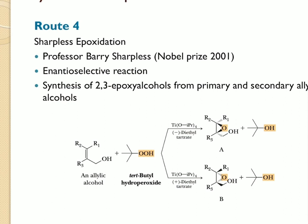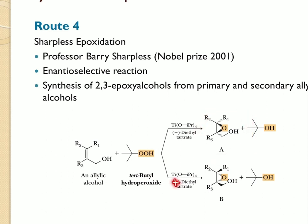What is remarkable about Sharpless epoxidation is that it is stereospecific based on the diethyl tartrate that is added. If we use (-)-diethyl tartrate, it leads to the formation of enantiomer A, but if we use (+)-diethyl tartrate, it leads to the formation of enantiomer B.